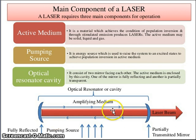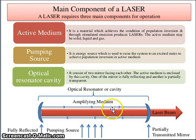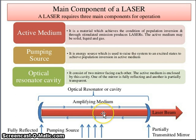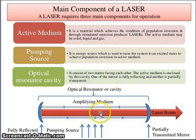Now I repeat the main components of laser. A laser requires three main components. First is the active medium — it is a material which achieves the condition of population inversion through stimulated emission, which we had already discussed in previous lectures.